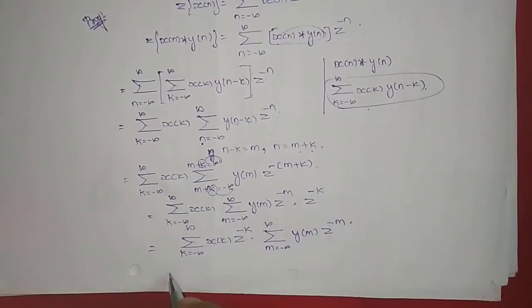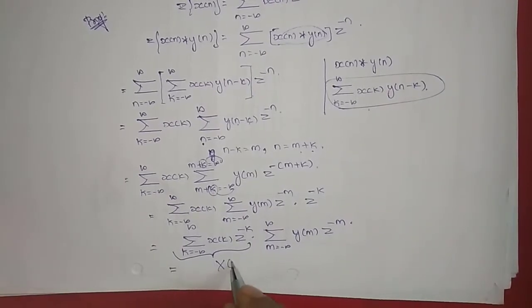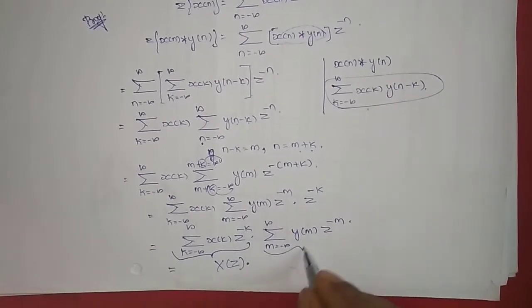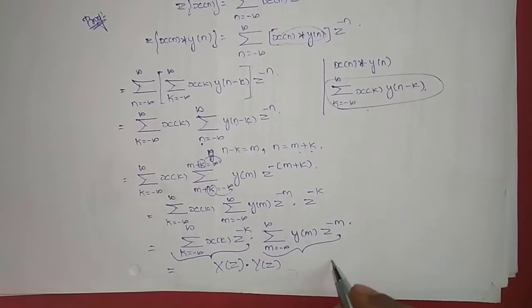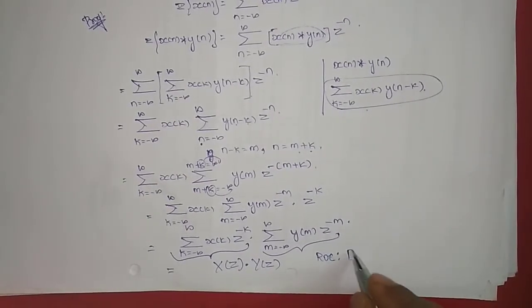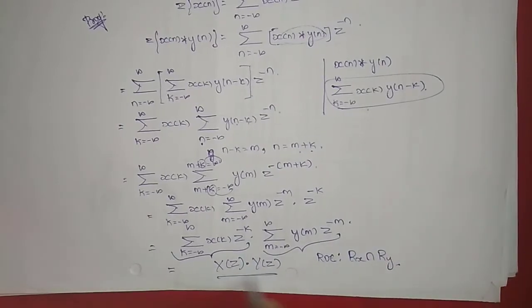From the definition of Z-transform, the first summation is X(z) and the second summation is Y(z). So the Z-transform of x(n) convolved with y(n) equals X(z) times Y(z), and the ROC does not change — it remains the intersection of Rx and Ry.